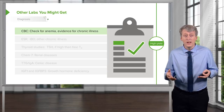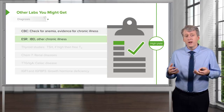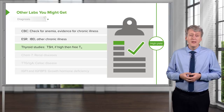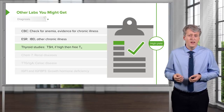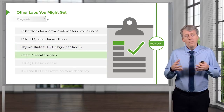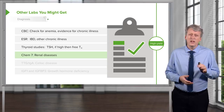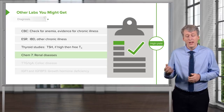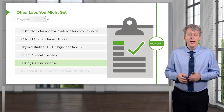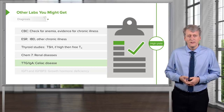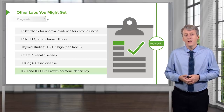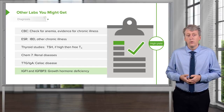You might get a CBC to check for anemia or to look for evidence of chronic illness. You might get a sed rate to look for inflammatory bowel disease or other inflammatory processes. Thyroid studies would probably be indicated — typically just a TSH, and if it's high, reflexively get a free T4 to see exactly what the thyroid level is. We might check a CHEM7 looking specifically for renal diseases, such as renal tubular acidosis, and get a urine as well. It would be very appropriate to check for celiac disease — we can get a TTG and a total IgA level. And if we suspect growth hormone deficiency, we can get IGF-1 and IGF-BP-3 as heralding markers.